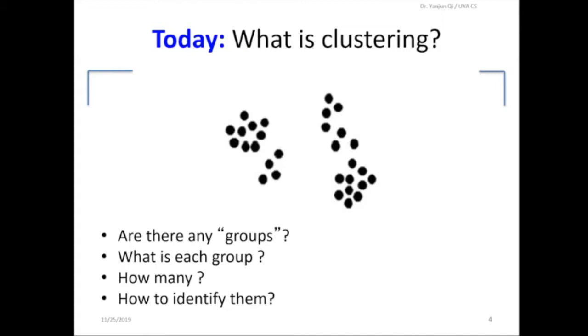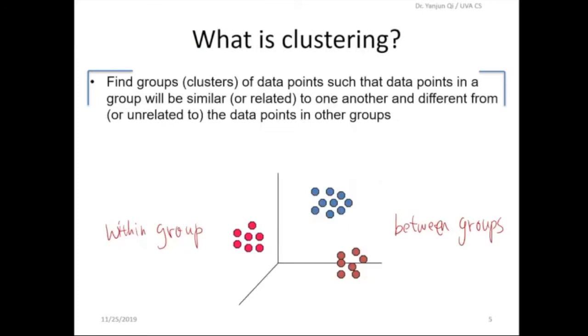So for this one, your eyes will naturally tell you there are roughly two groups, right? If you think about it, this natural thinking of two groups is based on what? Actually, density, right? So those points locate more close to each other in one group, and these groups locate more close to each other. And these two groups, the points are kind of separated apart from each other.